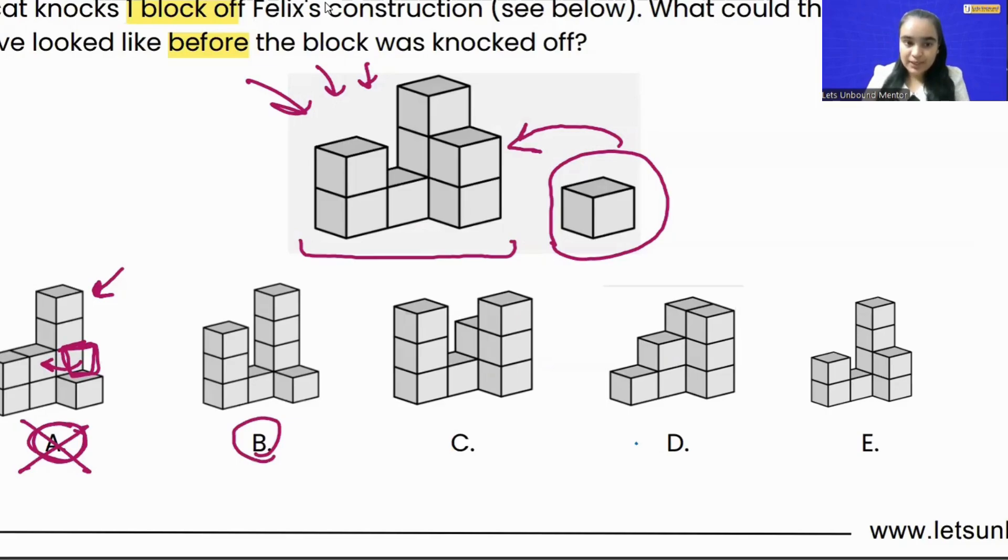Let's see option B. In option B, we can see they have added the block over here, but along with it one block which was here has been moved. That means option B is also not correct. We cannot move any of the blocks. We just have to keep the block that the cat knocked off back into the construction.